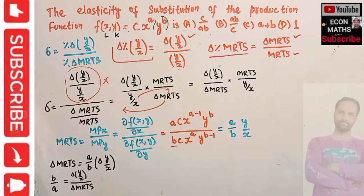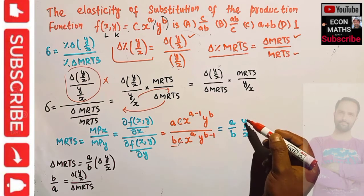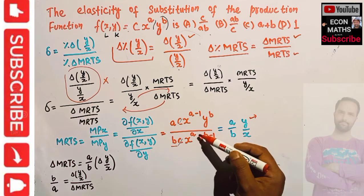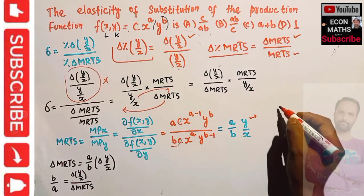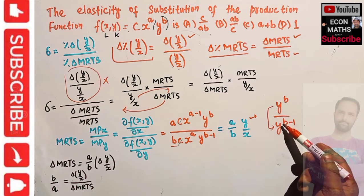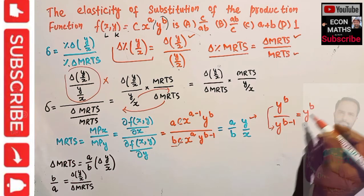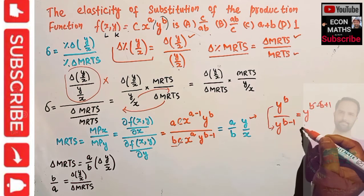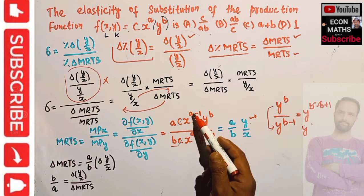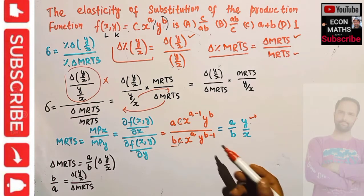The c and c terms cancel, leaving a/b. For the y/x part: y^(b-1) in the denominator and y^b in the numerator — since they have the same base, exponents subtract: b minus (b-1) = 1, so we are left with just y. Similarly for x, giving us y/x. So MRTS = (a/b)·(y/x).